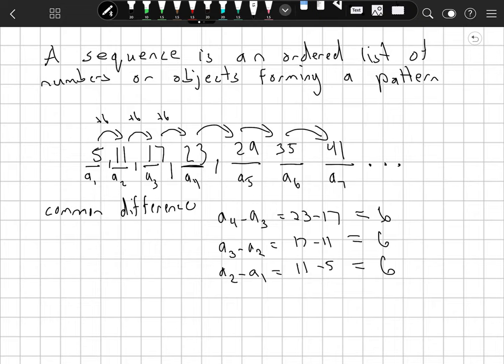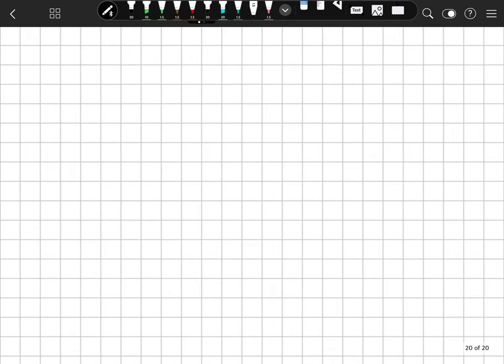Fourth term minus the third term, third term minus the second term, second term minus the first term. And if we get the same number every time, we know it's an arithmetic sequence, and that number happens to be the common difference. Let's try one for practice.